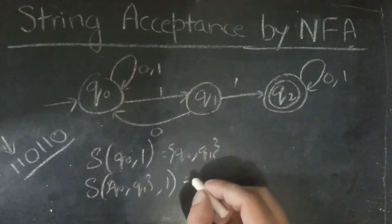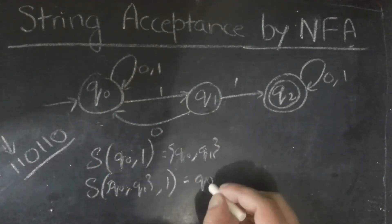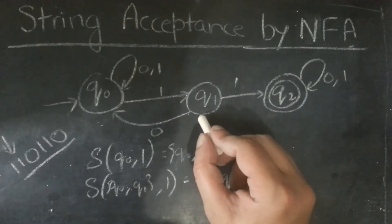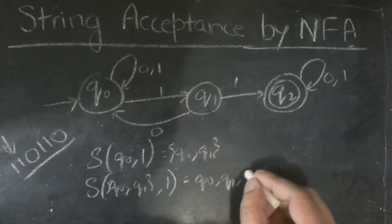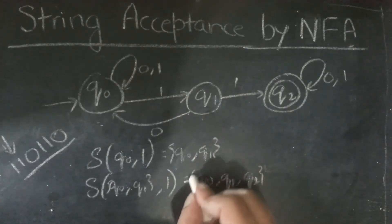So, on q0, 1 will take us to q0 and also q1. And q1, 1 will take us to q2. So, it contains all three states.